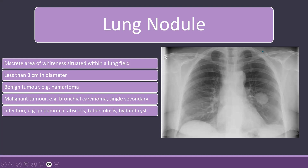An abscess is a cavity filled with part air and part fluid. But if the cavity is completely filled with fluid, then it will give the appearance of a nodule or a mass. This is called round pneumonia, and it can also appear as a nodule.